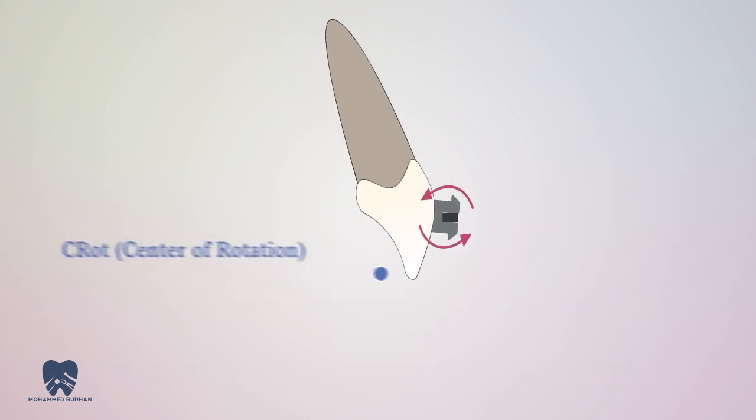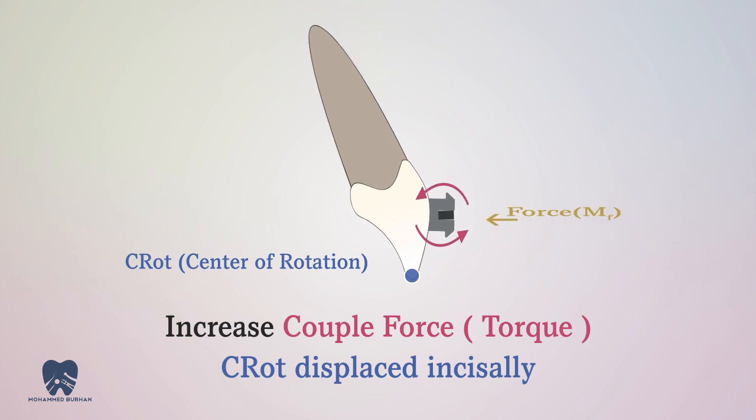If moment of couple is further increased, the center of rotation will be near the incisal edge. We'll produce root torque.